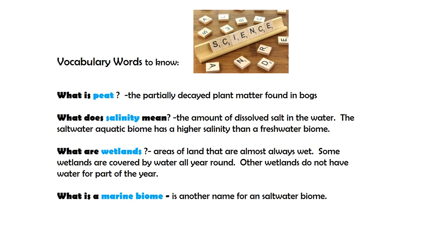The last thing on the review sheet are some vocabulary words to know. We just talked about what peat was. We also talked about what salinity means — that's the amount of dissolved salt in the water. Saltwater biomes have a higher salinity than freshwater. Third vocab word: wetlands — areas that are always wet. And the last term is marine biome — just make sure you know that's another word for a saltwater biome.